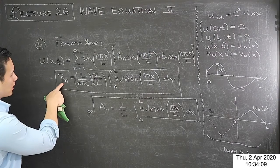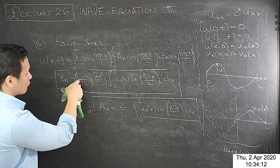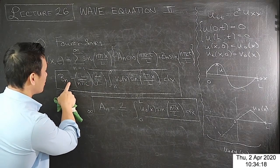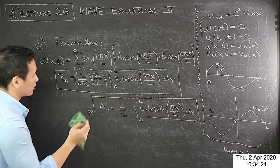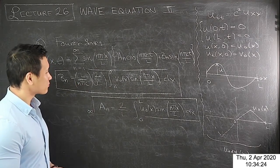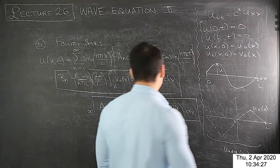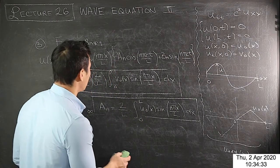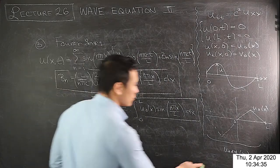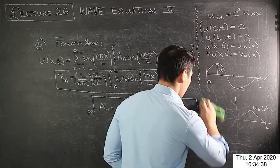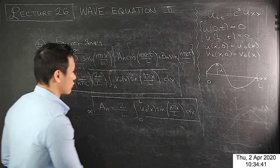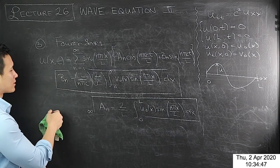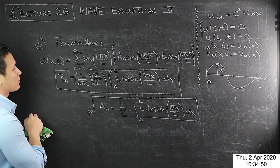Now let's apply this to the example of the plucked string. The b_n formula involves L over nπc times 2 over L times the integral — but for the case of the plucked string, b_n will turn out to be zero, as we'll see.